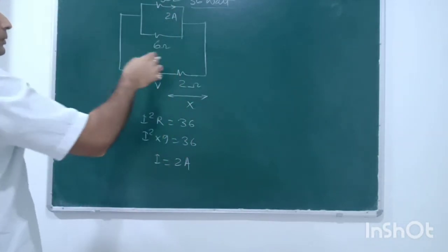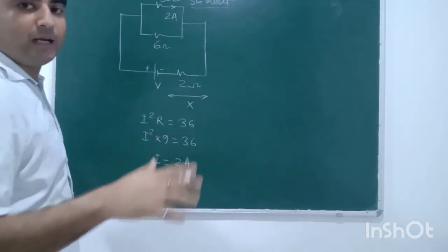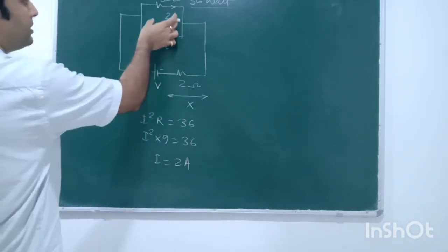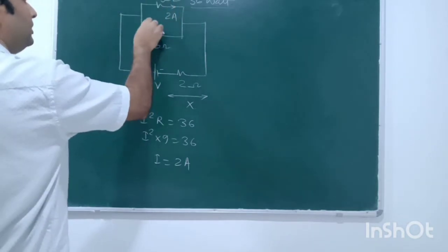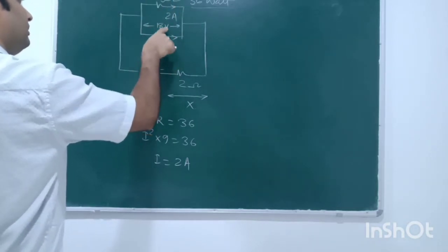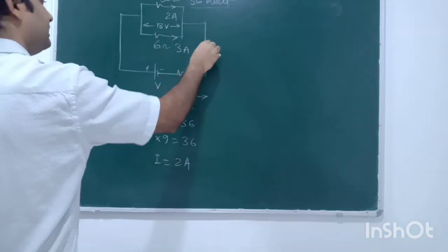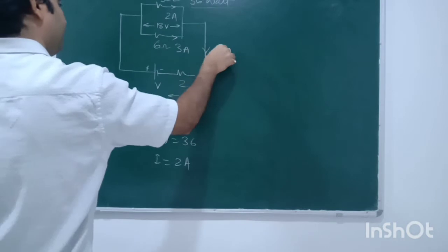Correct. So, how much will it come from here? Now, you have to put it in the current division. Or, this voltage is 9 into 18V. So, the current will come from here. V upon R, 3A. So, how much will it come from here? 3 plus 2, 5A.